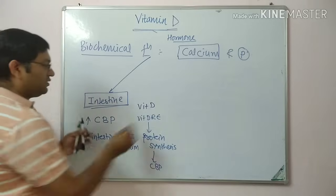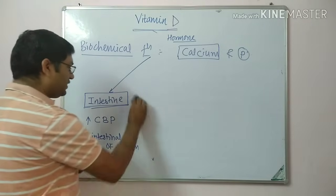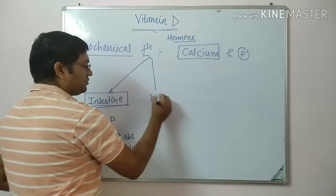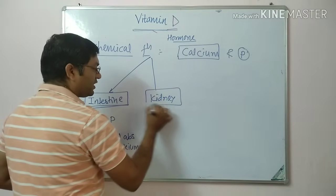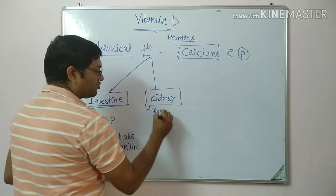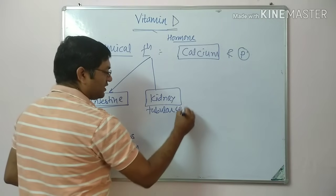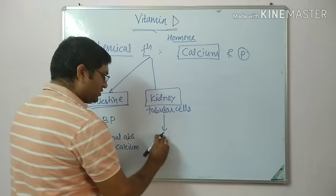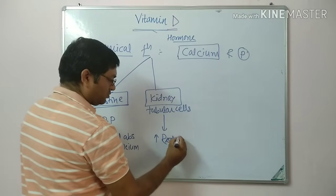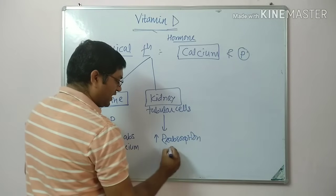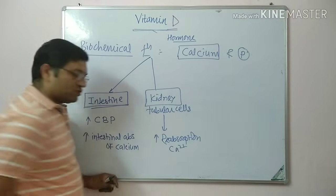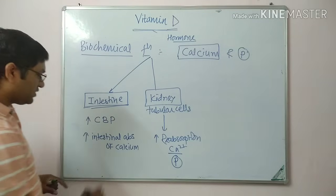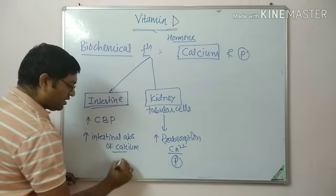The second target tissue for vitamin D is the kidneys. It acts on renal tubular cells and increases the reabsorption of calcium from renal tubules. It also increases the absorption of calcium and phosphate, both in the kidneys and intestine.